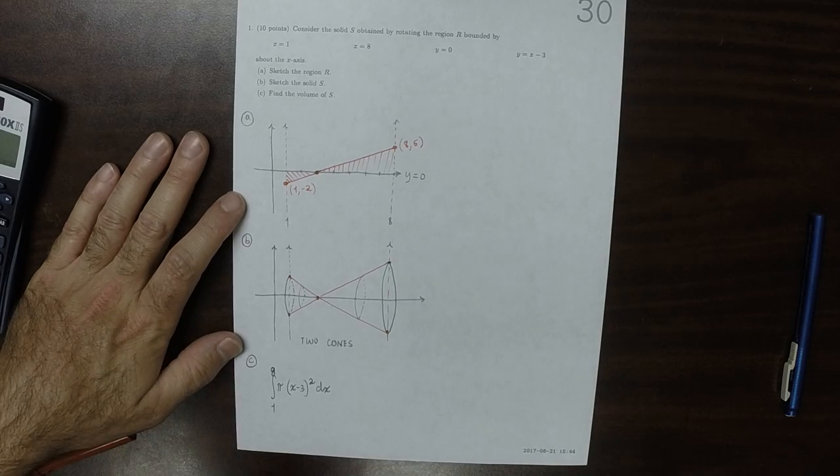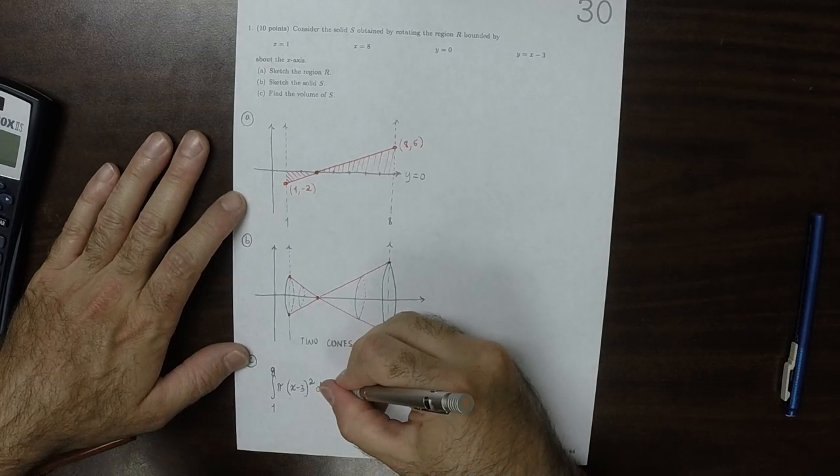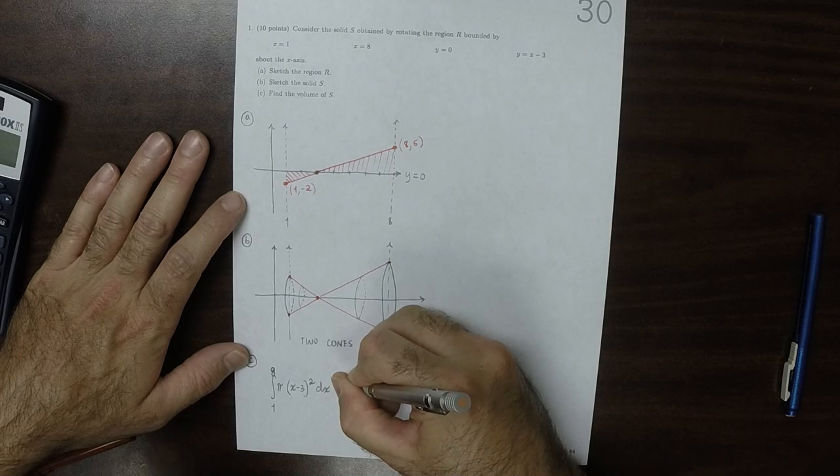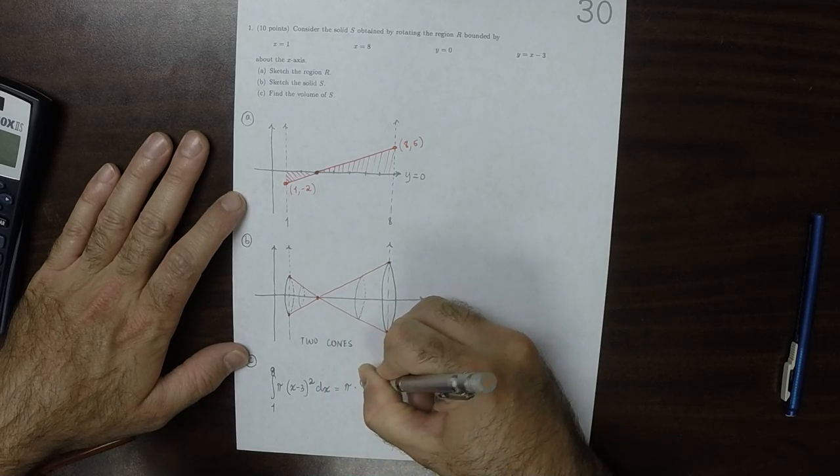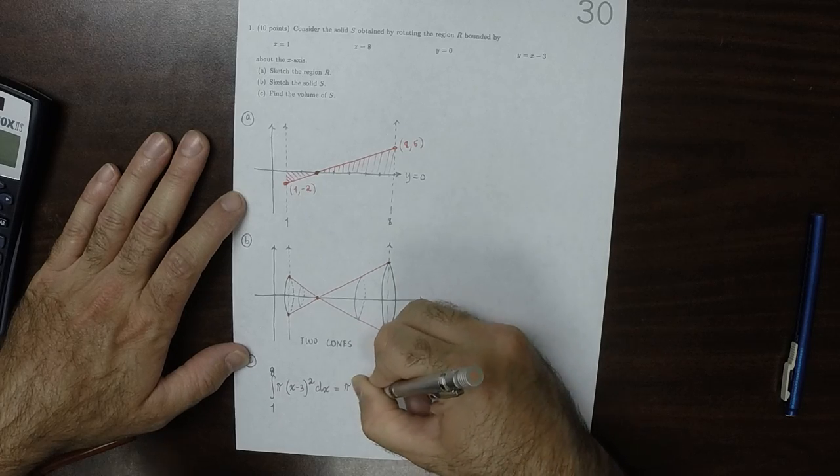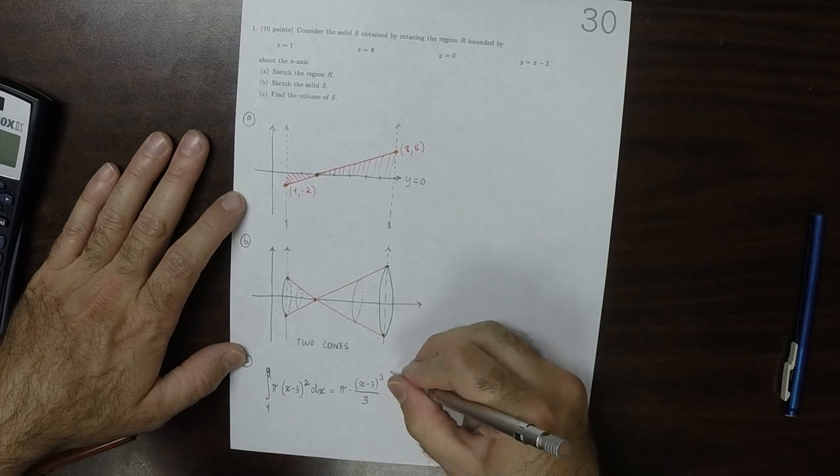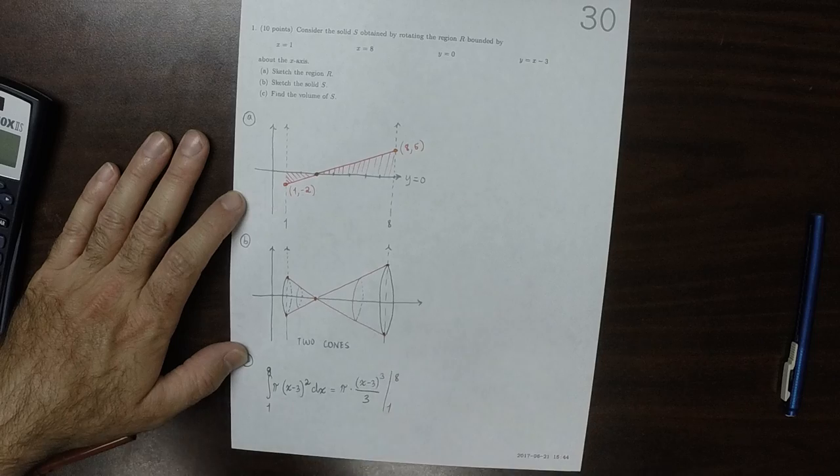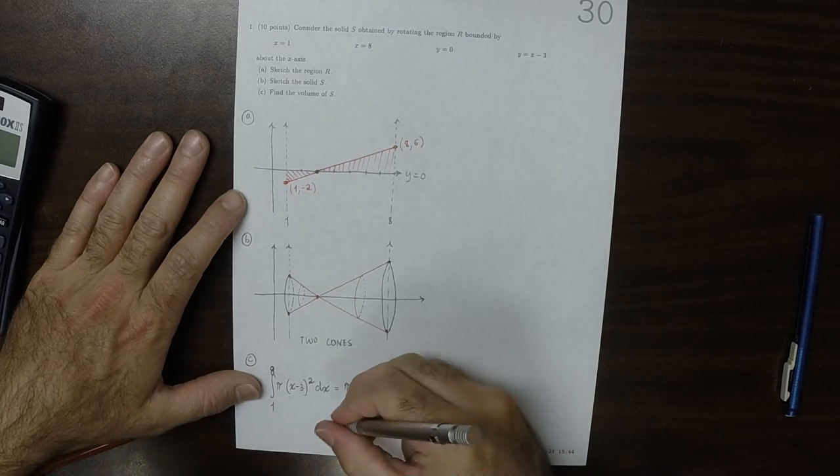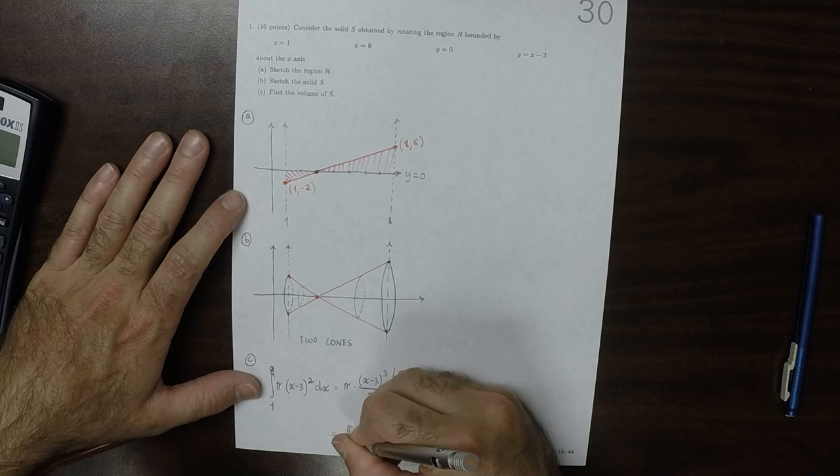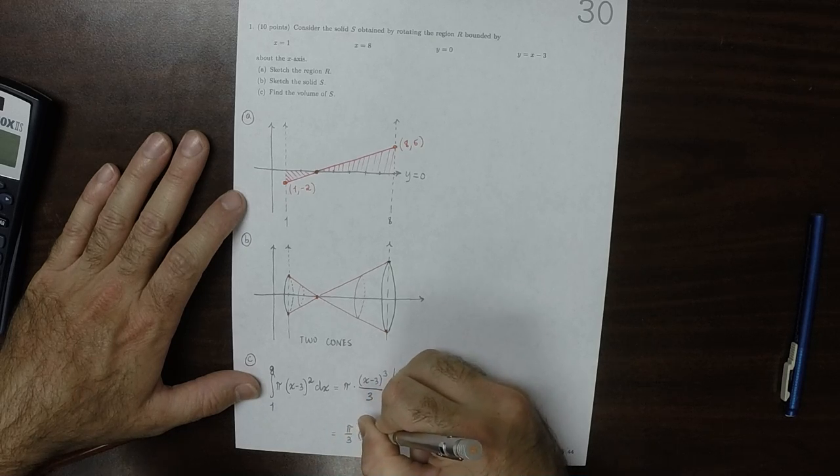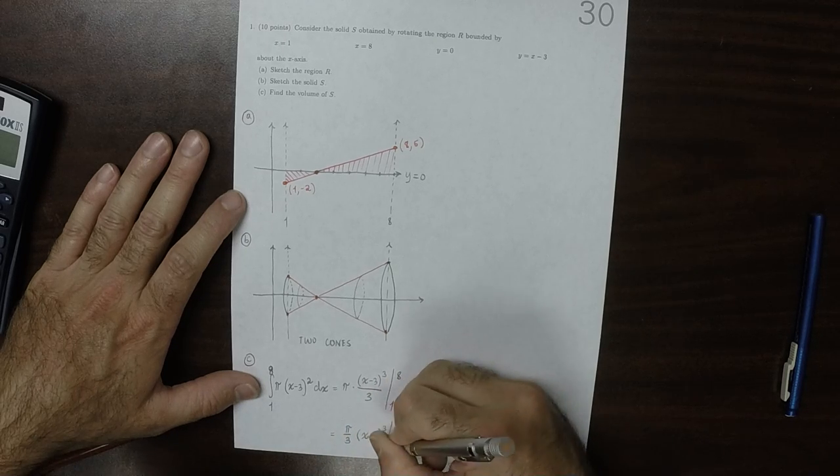So let's do that. So that would be pi times x minus 3 to exponent 3, and then over 3 from one to eight. And then this would be pi over 3, x minus 3 to exponent 3, one to eight.